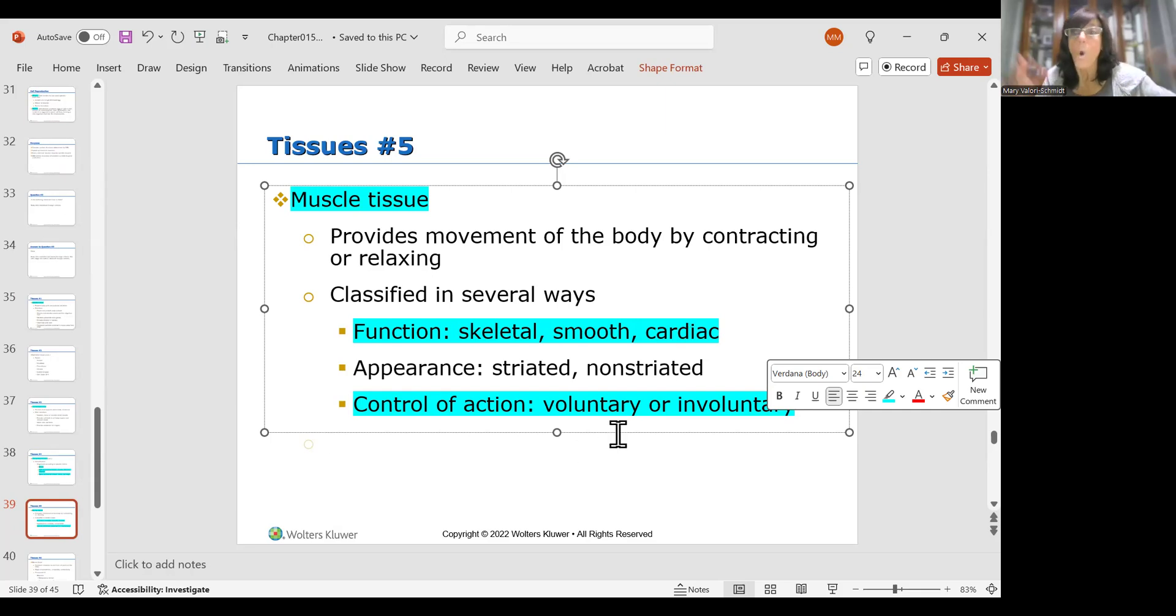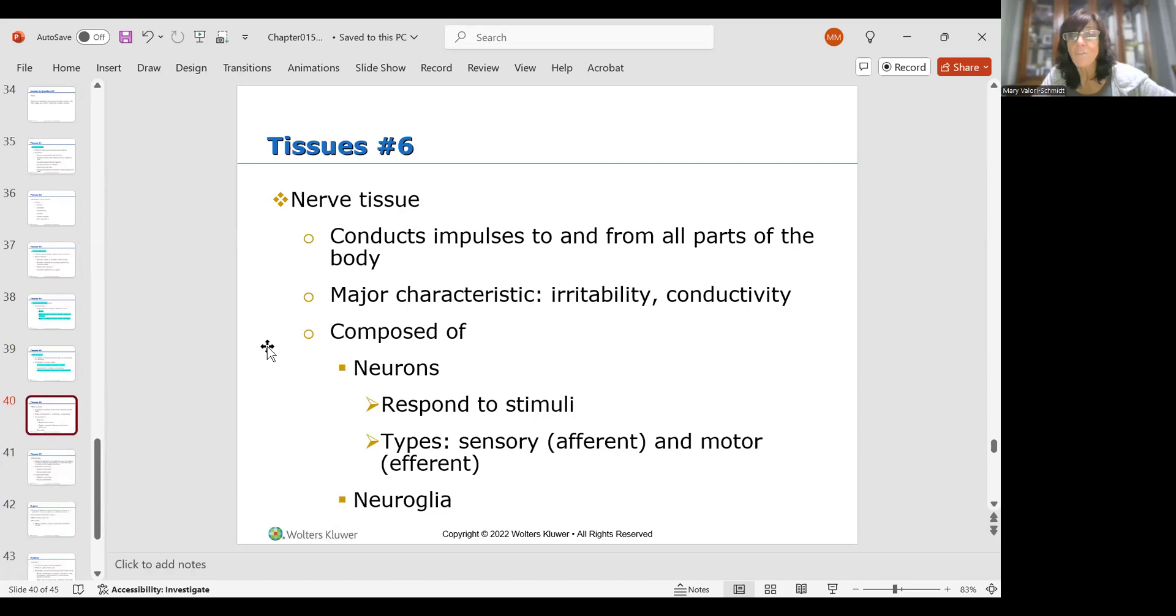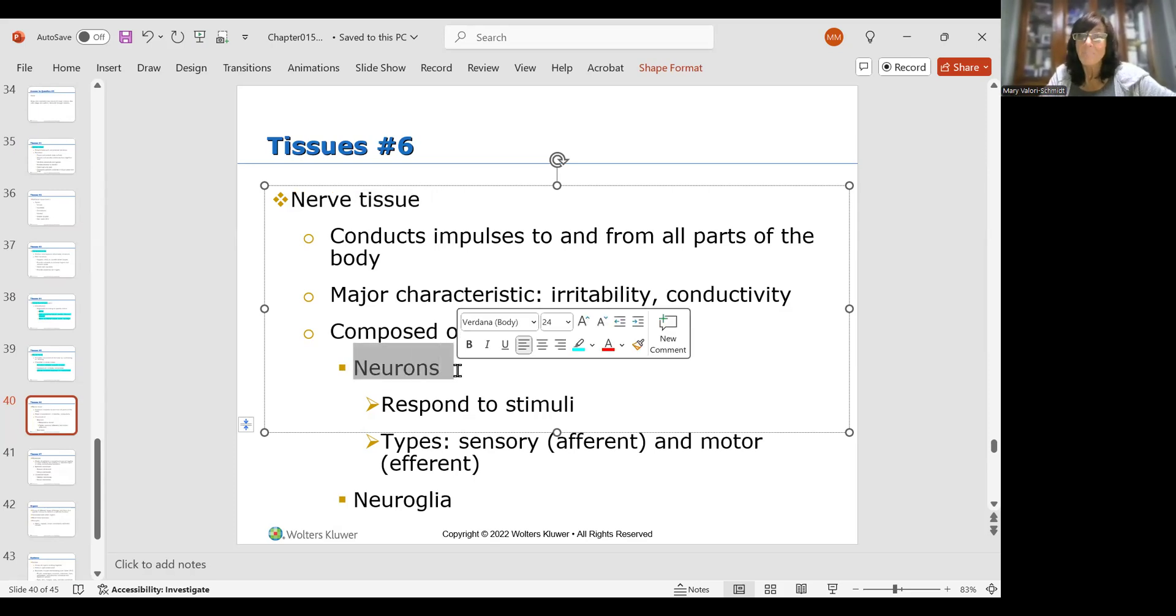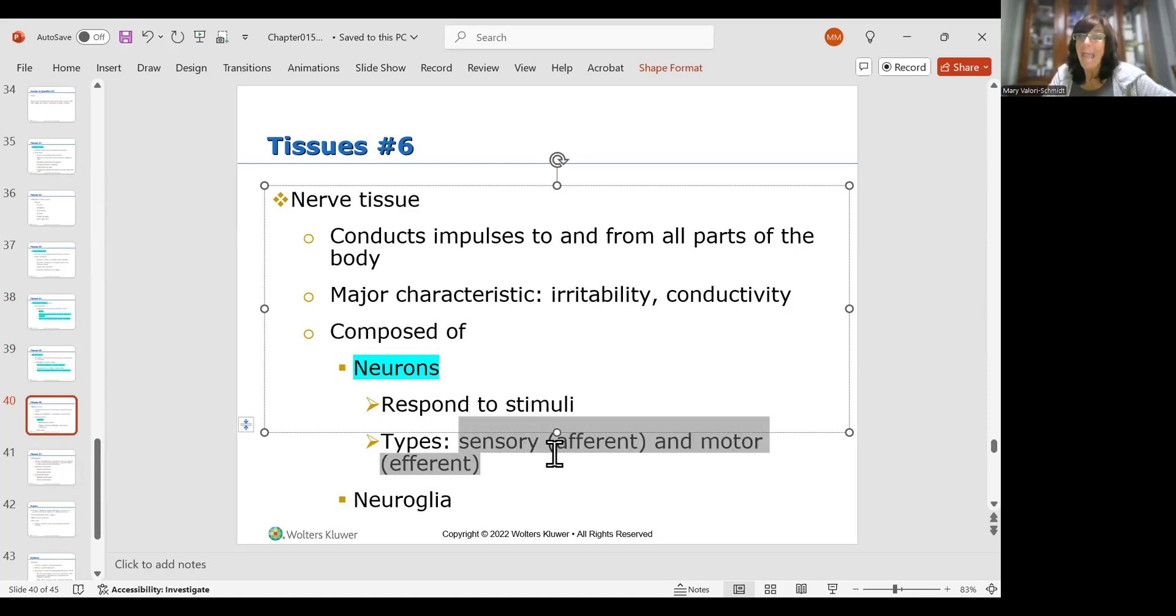Then we have nerve tissue. Nerve tissue sends electrical signals back and forth throughout the body. And you have neurons which are the cells, the nerve cells, the nerve cells that make up nerve tissue, and they respond to different kinds of activity. You have two types of neurons: sensory, afferent, and motor, efferent. And those you're going to need to know.